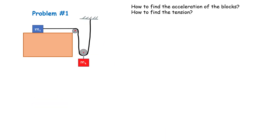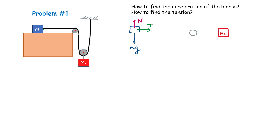Alright, so here's problem one. My goal is to take this configuration and find the acceleration and the tension in the string. The first thing we do is a free body diagram. Here's block M1 — there is a weight M1G acting on it. It's resting on that surface, so I'll call a normal force N acting up. There is one string connected to it, so there's a tension T in that string. There is no friction between the block and the surface. The other block is M2.